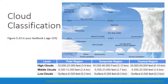High clouds normally have bases well above 20,000 feet — this diagram shows 23,000 feet. Temperatures at these altitudes are usually below freezing, so high clouds are generally composed of ice crystals or supercooled water droplets. Middle clouds occupy heights from 6,500 to 20,000 feet, and they're composed of water droplets or ice crystals depending on the time of year and the temperature profile of the atmosphere.